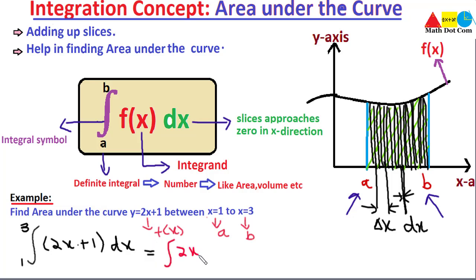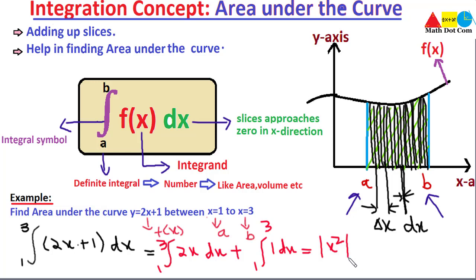We integrate the terms separately: the integral from 1 to 3 of 2x dx plus the integral from 1 to 3 of 1 dx. Taking the constant out, the integral of x is x²/2, so the 2 cancels and we get x². The integral of 1 is x. So we have [x²] from 1 to 3 plus [x] from 1 to 3. Definite integrals give you a single constant number, which is why we use them for area under the curve.